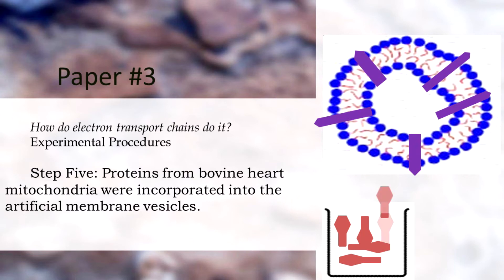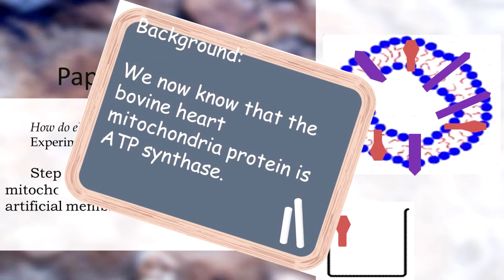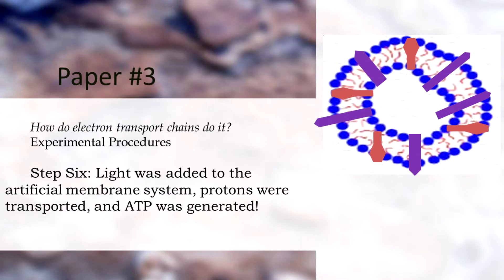Racker and Steckenius then took the next step and incorporated proteins from bovine heart mitochondria into their membrane vesicles. We now know that the protein they incorporated was ATP synthase. When they added light to their artificial membrane system, protons formed inside the vesicles and were transported out via the mitochondrial protein.